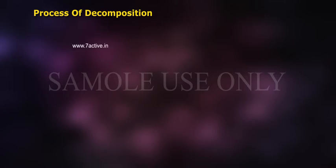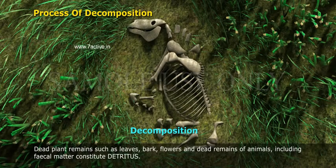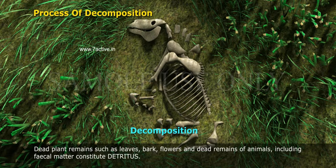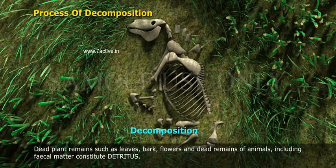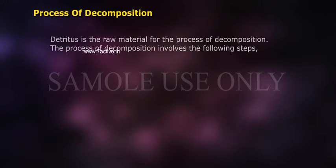Dead plant matter such as leaves, bark, and flowers, and dead remains of animals including faecal matter, constitute detritus. Detritus is the raw material for the process of decomposition.